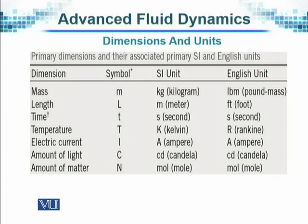Mass is denoted by M. Length is normally denoted by L. Time is T. Temperature is also denoted by T — in SI units we use Kelvin, and in English units it is Rankine. Electric current — we are very familiar that it is ampere — and similarly the other terms. So the seven basic things are here.